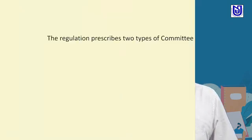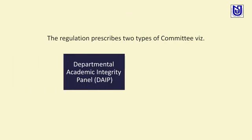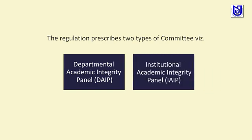The regulation prescribes two types of committees: the Departmental Academic Integrity Panel (DAIP) and the Institutional Academic Integrity Panel (IAIP). These two committees shall follow the principles of natural justice while deciding allegations of plagiarism against a student, faculty, researcher or staff of the higher education institution. The whole mechanism has been chalked out in UGC Regulation 2018 very clearly.